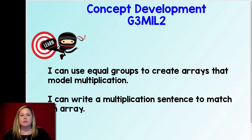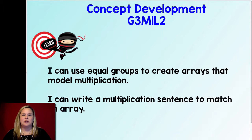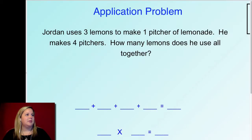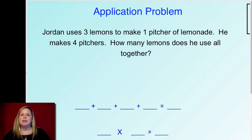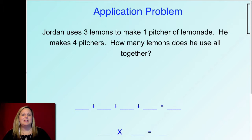First, I want to review how we can take a picture and turn it into a multiplication expression. So jumping into our next part: Jordan uses three lemons to make one pitcher of lemonade. He makes four pitchers. How many lemons does he use all together?